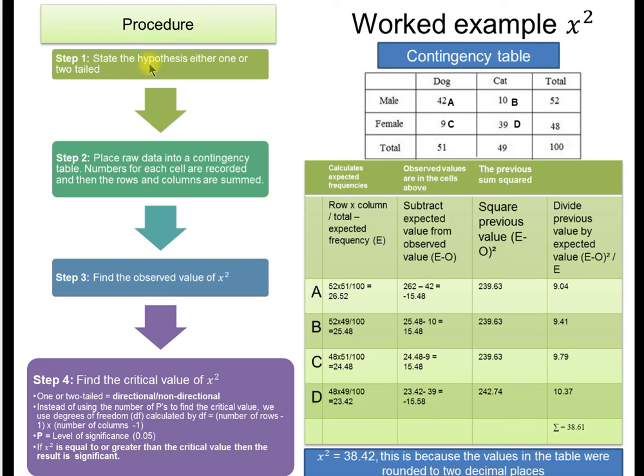Procedure. All these begin the same way. State the hypothesis, either one- or two-tailed. We'll always work on the assumption of a one-tailed hypothesis. But be very careful, because we use different values for a two-tailed. Then we place the raw data in a contingency table. This is a contingency table. In this case, we're looking at whether or not males and females prefer, is there a difference between gender and preference for dogs and cats, pet ownership. In this case, we then just put in the frequency. We've asked in total 100 people.